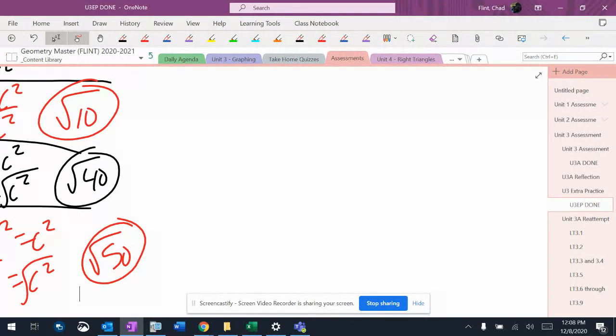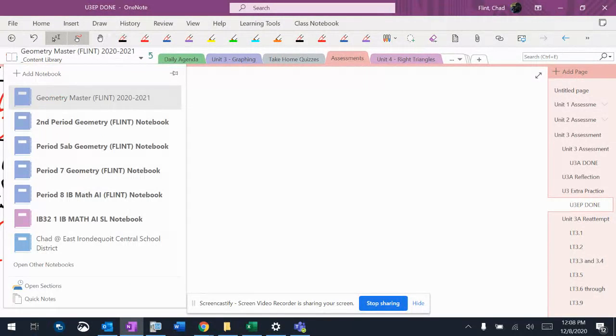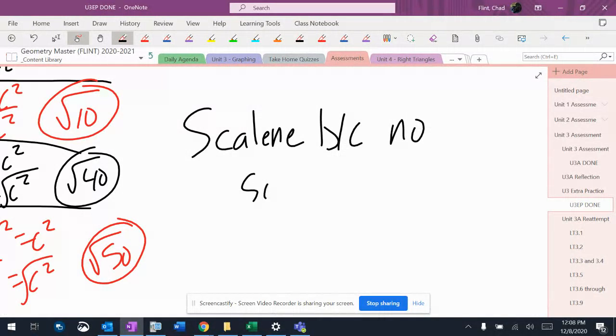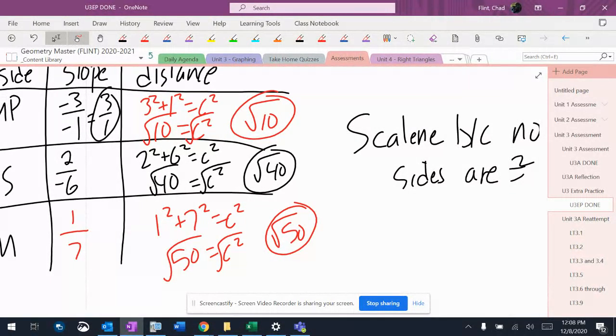Scalene has no sides the same and that's definitely true. And then isosceles has two sides the same. So I'm going to say that this is scalene because no sides are equal. All right, now let's look and see your solutions.